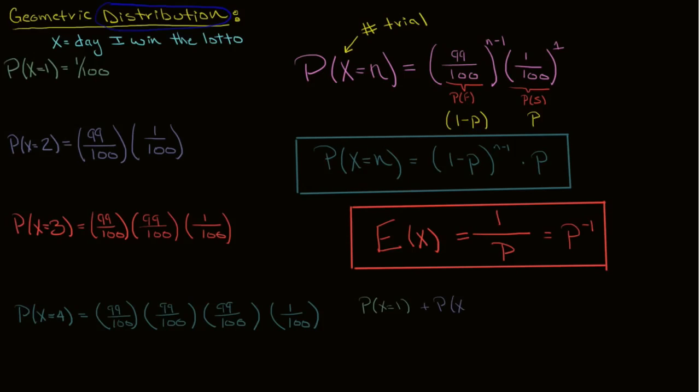And for any distribution, the probability that x equals 1 plus the probability that x equals 2 plus the probability that x equals 3, and you keep on going for all possible values of x, and when you add them all up together, you should get 1. We know that for this geometric distribution there's actually an infinite number of possible x values, and if I add them all together I should get 1. We'll see how that works in the next video.